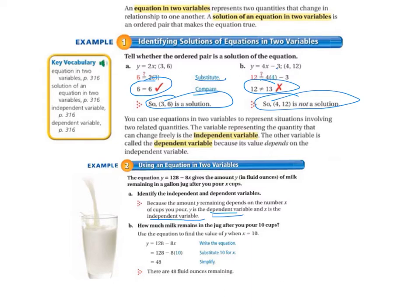So x can change every time, but y depends on how much you pour. So that makes y dependent and x independent.